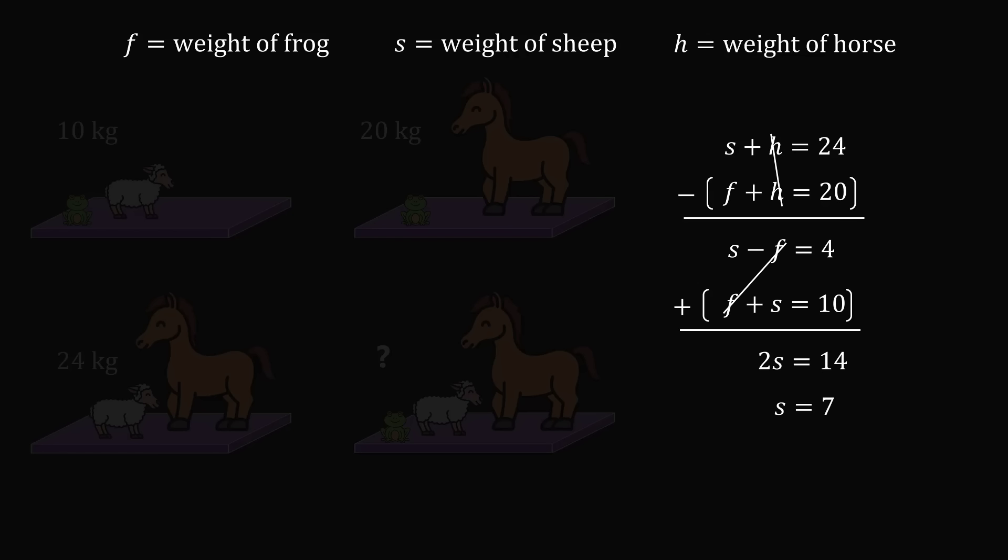The weight of the sheep is 7 kilograms. Having solved for one of the weights, it will be easy to solve for the others. So let's focus on this value, S is equal to 7, and the original three equations.